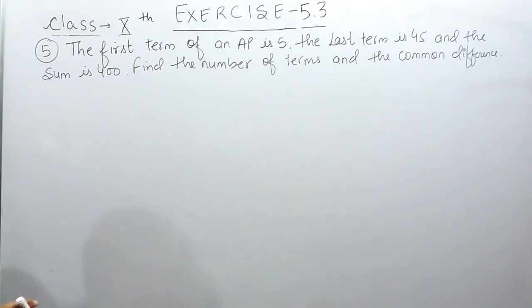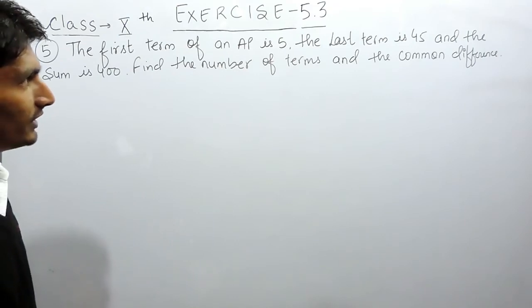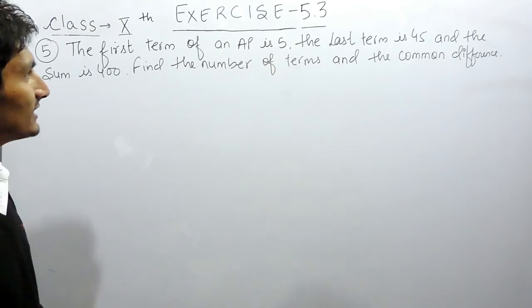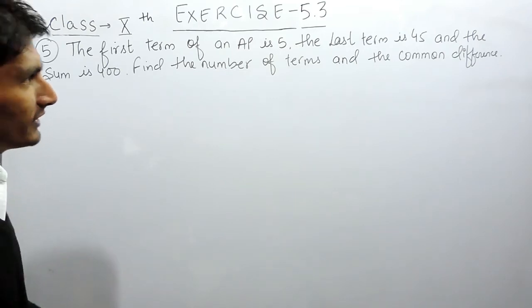The question says, the first term of an AP is 5, the last term is 45 and the sum is 400. Find the number of terms and the common difference.